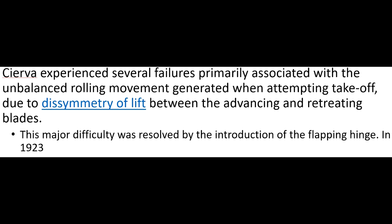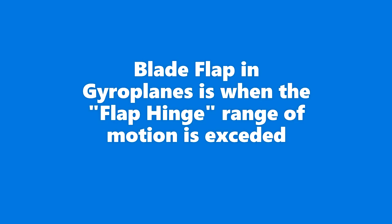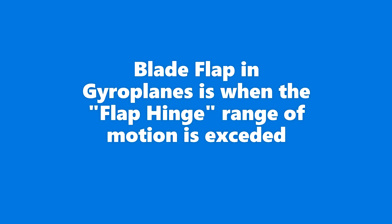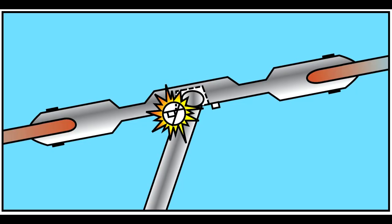There's a key concept that should be understood from this history lesson: a rigid rotor will result in a gyroplane rolling over on a takeoff roll. When a gyroplane pilot talks about blade flap, the gyroplane pilot is really saying the flap hinge has exceeded its limits of movement. The effect is the rotor becomes rigid.